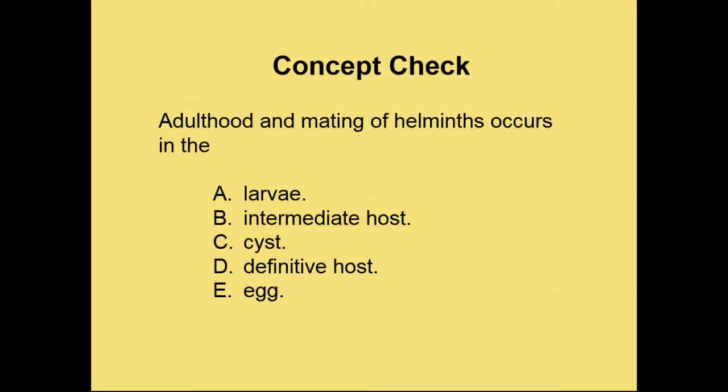Concept check: Adulthood and mating of helminths occurs where? In the larva, the intermediate host, the cyst, the definitive host, or the egg? The answer is D — the definitive host.